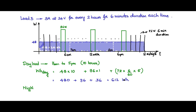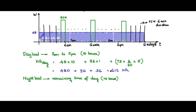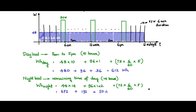The night load covers the remaining 14 hours (24 − 10). Watt-hours night = 48W × 14h + 96W × 2h (two water pump runs outside daytime) + 72W × (6/60)h × 7 (the remaining seven spikes of load 3) = 672 + 192 + 50.4 = 914.4 watt-hours of night load. Together, day and night loads cover the total watt-hours for the entire day.